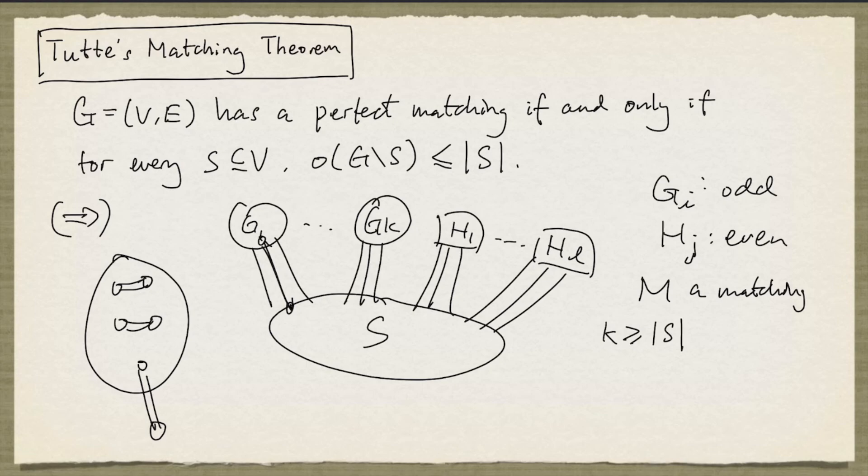Now as before, the number of matching edges that join an odd component to a node in S cannot exceed the cardinality of S. And for each component that is not joined by a matching edge to a node in S, there will be at least one M exposed node. And so there are going to be at least K minus the cardinality of S M exposed nodes.